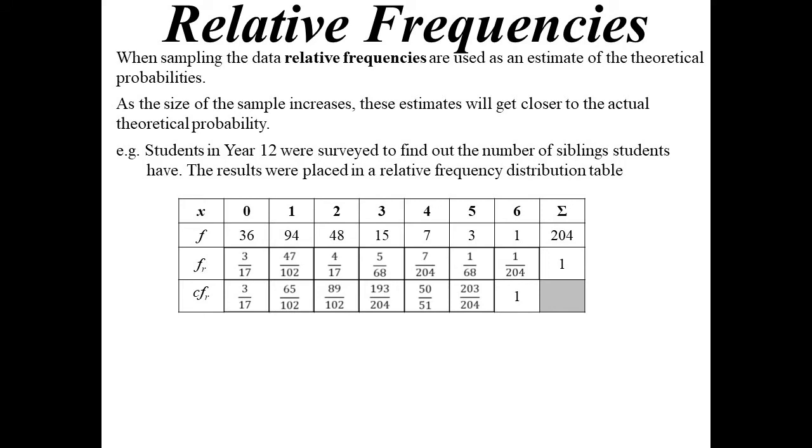Students in year 12 were surveyed to find out the number of siblings students have. There's our relative frequency distribution table there. I'm now calling it a relative frequency distribution table. There's all the frequencies. Divide by 204, you get the relative frequency. They should all add up to be 1. Then we also add in a cumulative frequency, just adding up those relative frequencies as we go along. The cumulative relative frequency.